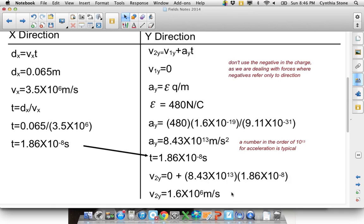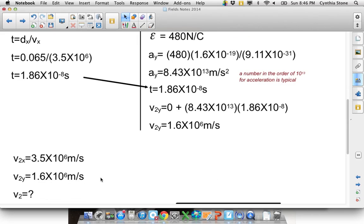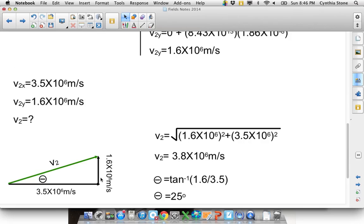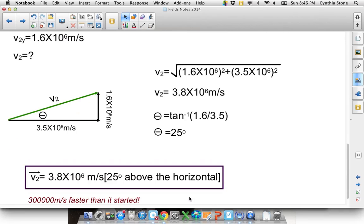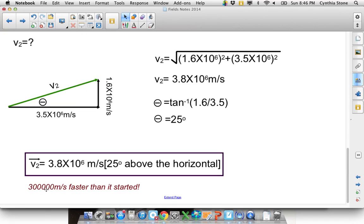So we know our V2y. We know our V2x. V2 then is, we've done it all before. Draw a right angle triangle. Solve for the angle. So the final velocity in this case will be 3.8 million meters per second at an angle of 25 degrees above the horizontal. So it's gained 300,000 meters per second in that little plate. That is a good answer. It's good because it's less than 3.0 times 10 to the 8. And it did speed up, which it should have. That's solving using force and field strength.